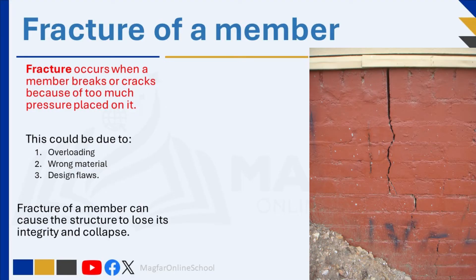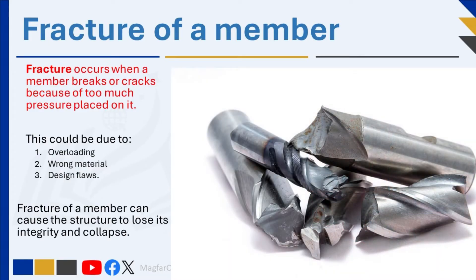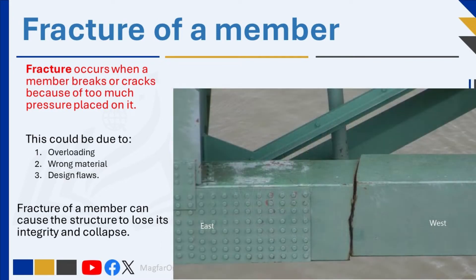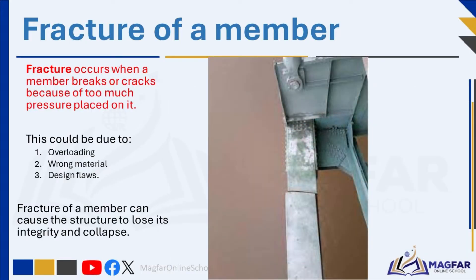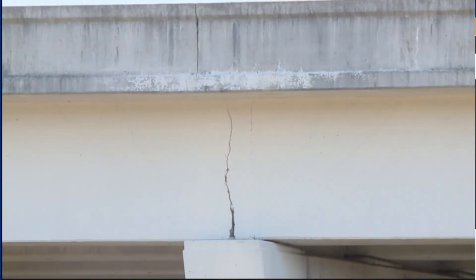There are several causes of fracture. First, overloading, resulting in the load-bearing capacity of a member being exceeded. Second, using the wrong material can cause fracture — if the material was not correct or strong enough, the member will experience more force than expected, resulting in fracture. Third, design flaws can also cause fracture. Fracture of a member can cause the structure to lose its integrity and collapse. For example, a pencil is made of stiff material; however, if too much pressure is applied to its two ends, it can break or fracture. If a structure cannot withstand forces such as wind or heavy loads, it can collapse.